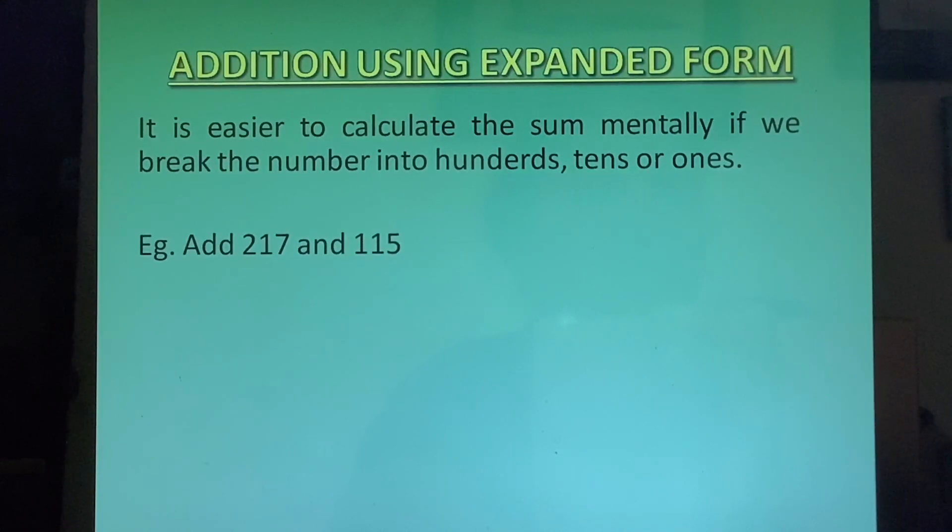Add 217 and 115. To add this we can write 217 plus 100 plus 15. We have broken up 115 as 100 plus 15. Now it is easy to add 100 to 217 which will give us 317. And 15 can be written as 10 plus 5.